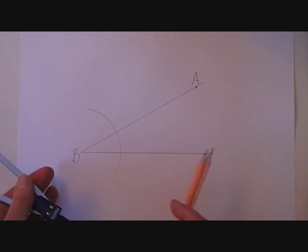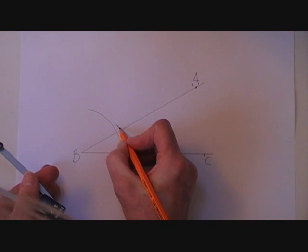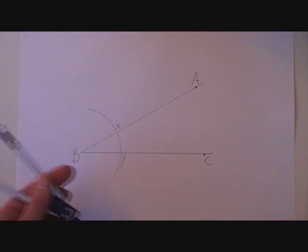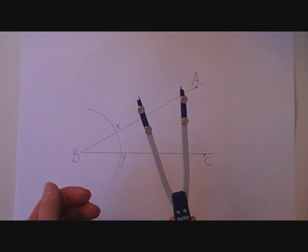That is AB and AC, and I am going to call those two points of intersection X and Y. The compass is still the same.